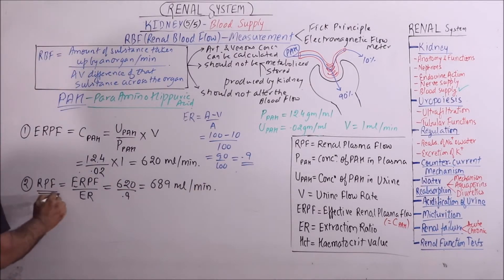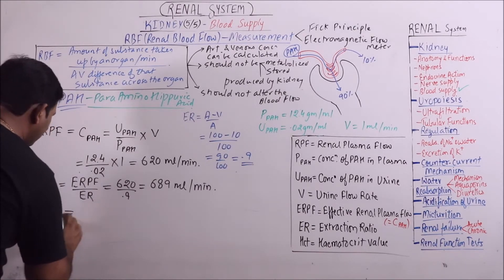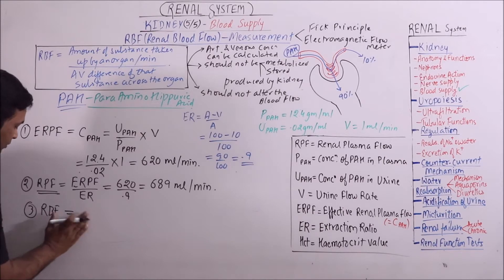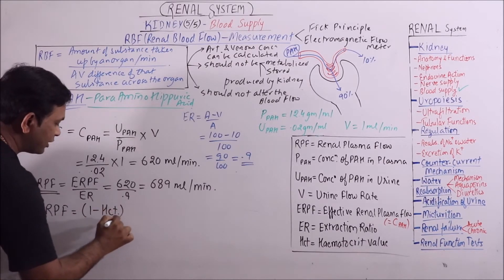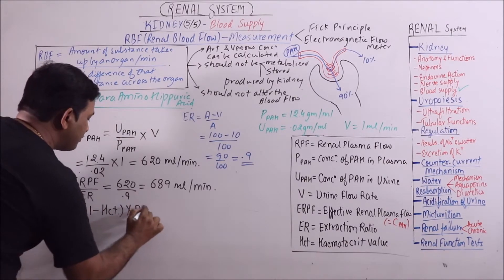This is renal plasma flow. Now, according to renal plasma flow, we will calculate the renal blood flow. The relationship between renal plasma flow and renal blood flow is that RPF equals (1 minus hematocrit) times RBF.